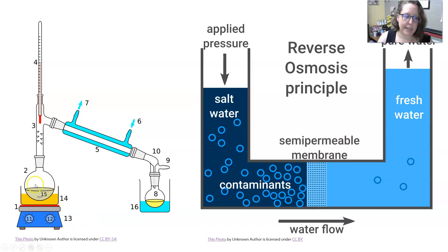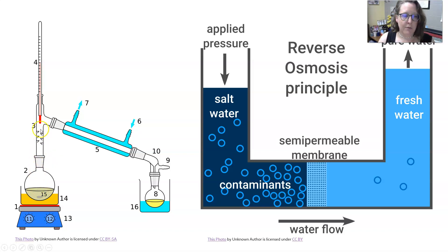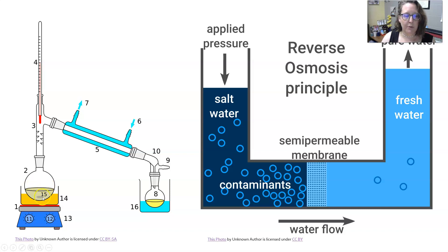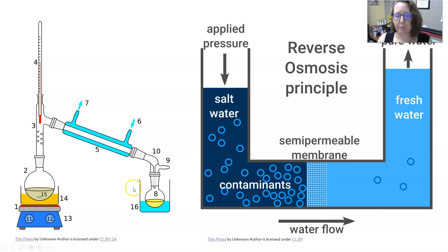In distillation, water is heated to boiling. The vapors rise, are cooled, and are collected in a separate area. This removes many impurities because substances that are too heavy to vaporize stay behind in the flask being heated.